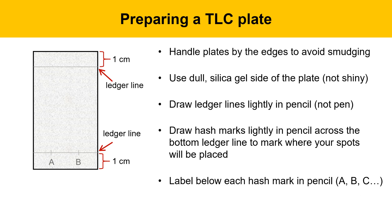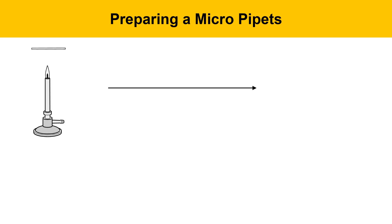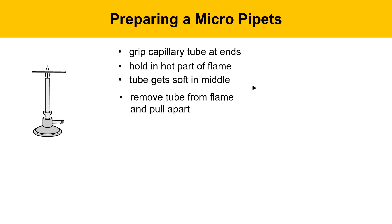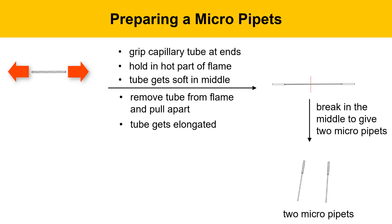Next, we'll describe preparing micropipettes to put spots on the plate. Start with a Bunsen burner flame, get a piece of capillary tubing, grip it on its ends, and hold it in the hot part of the flame. The tube will get orange hot and soft in the middle, like a wet spaghetti noodle. Remove the tube from the flame and immediately pull it apart — it will get elongated in the middle. Breaking this elongated tube in the middle gives us two micropipettes, which can be used to spot TLC plates.